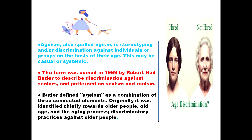Age discrimination applies to a person who is treated differently because of their age — one of the situations covered by the Equality Act. There are some exceptions; for example, students are not protected from age discrimination at school. The treatment could be the result of a rule or policy based on age.